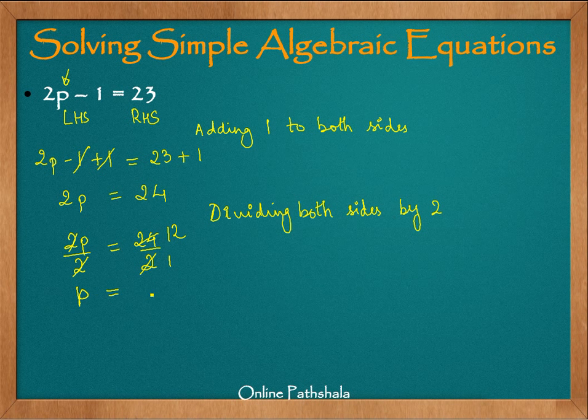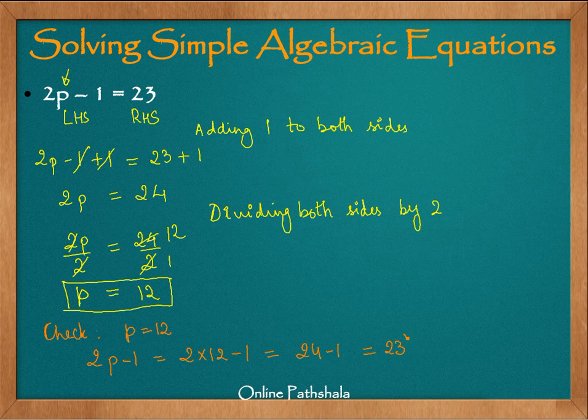Now, this is the value that we get as a solution for this equation. But we would like to check this equation. We check this equation by substituting p equals 12 on the left hand side which is 2p minus 1 which equals to 2 into 12 minus 1, which says that we have 24 minus 1 or the final that we get is 23. This is what we get for p equals 12. If you see that this is also equal to the right hand side, for p equals 12, we see that the left hand side of the equation is equal to the right hand side. And therefore, this is a solution of this equation.